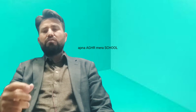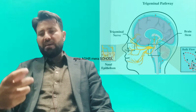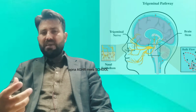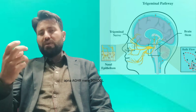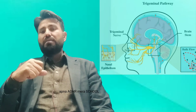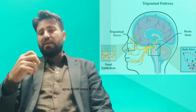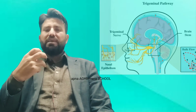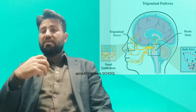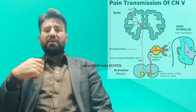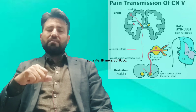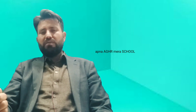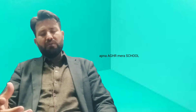When there is an injury, inflammation, or swelling in the facial region, its sensation is carried to the brain with the help of the trigeminal nerve. The trigeminal nerve transmits this impulse to the brain stem, then from the brain stem it is transmitted to the thalamus, and from the thalamus it is transmitted to the cortex of the brain. In this way, the pain sensation from the facial region is transmitted to the brain.